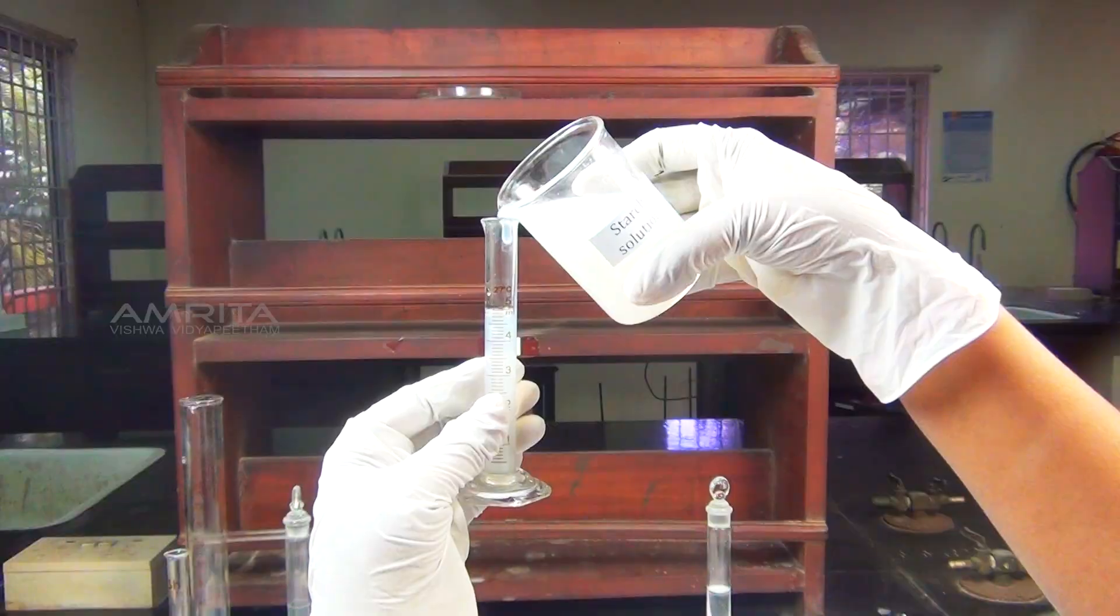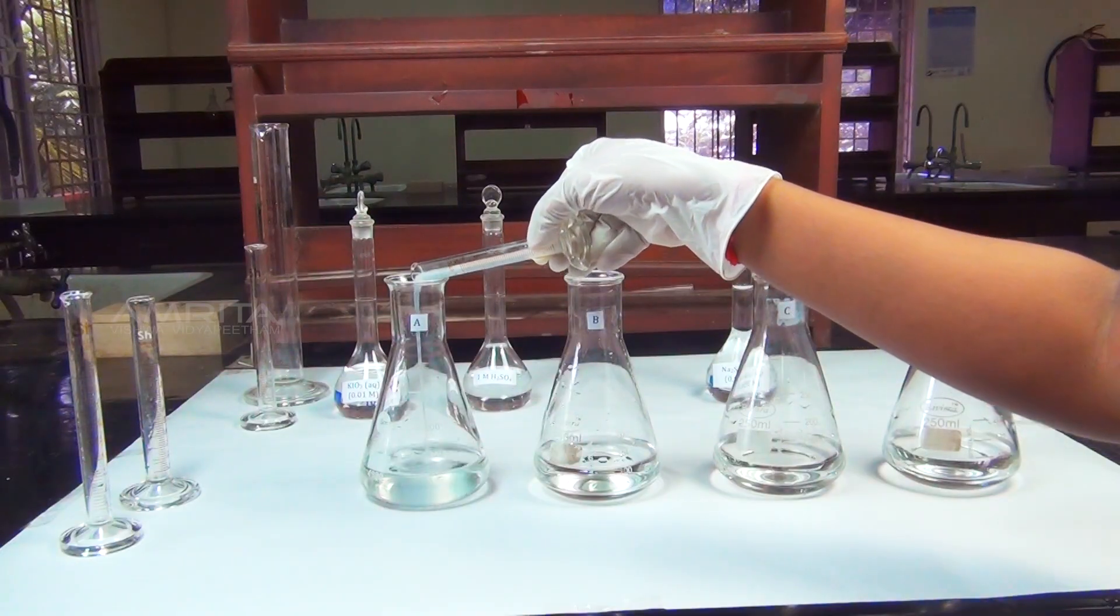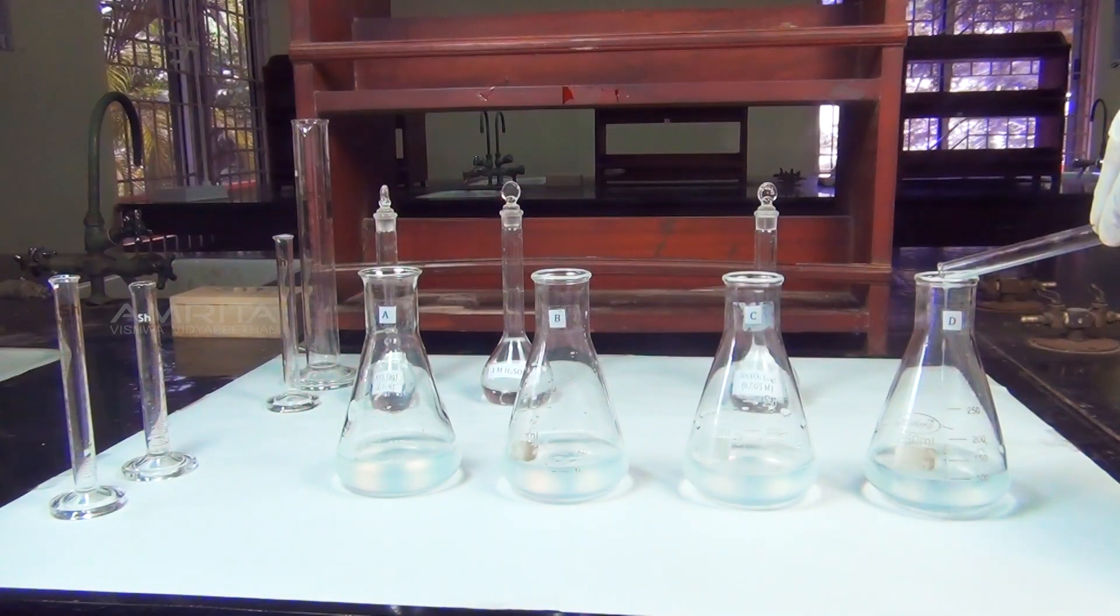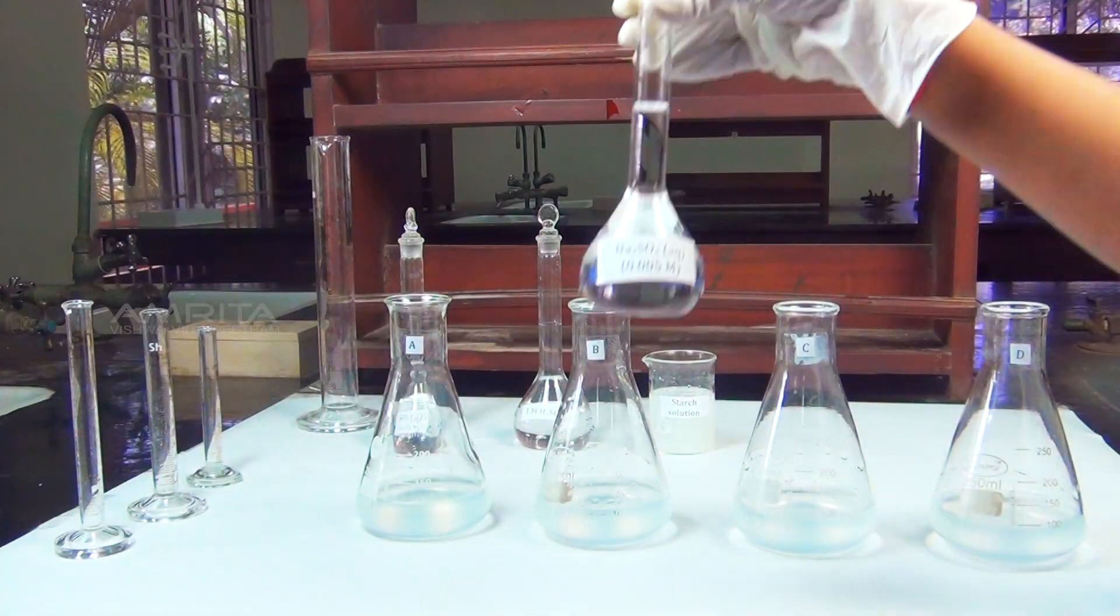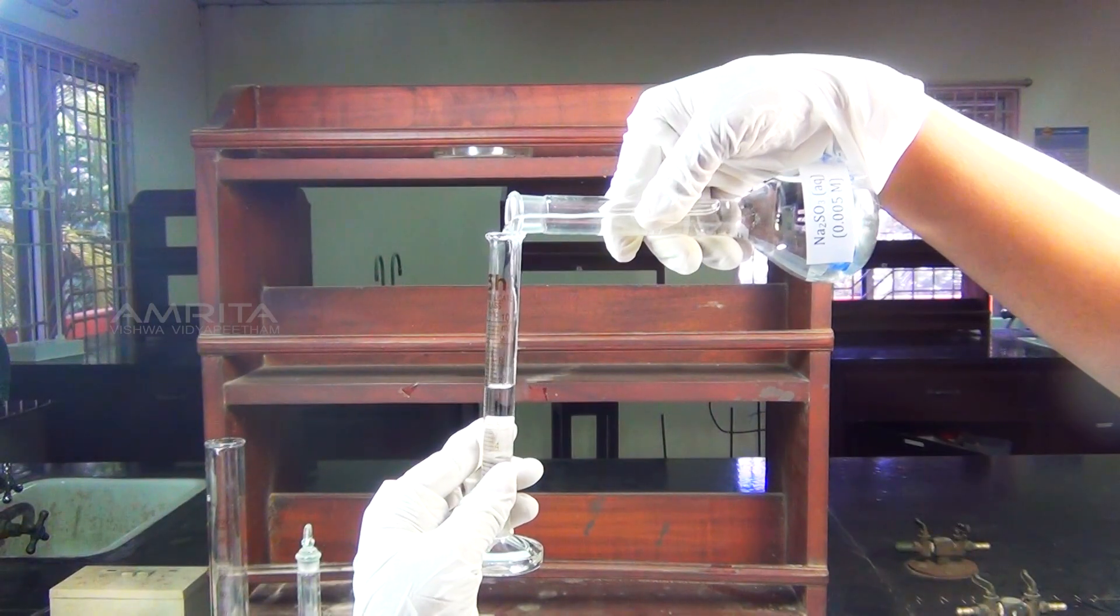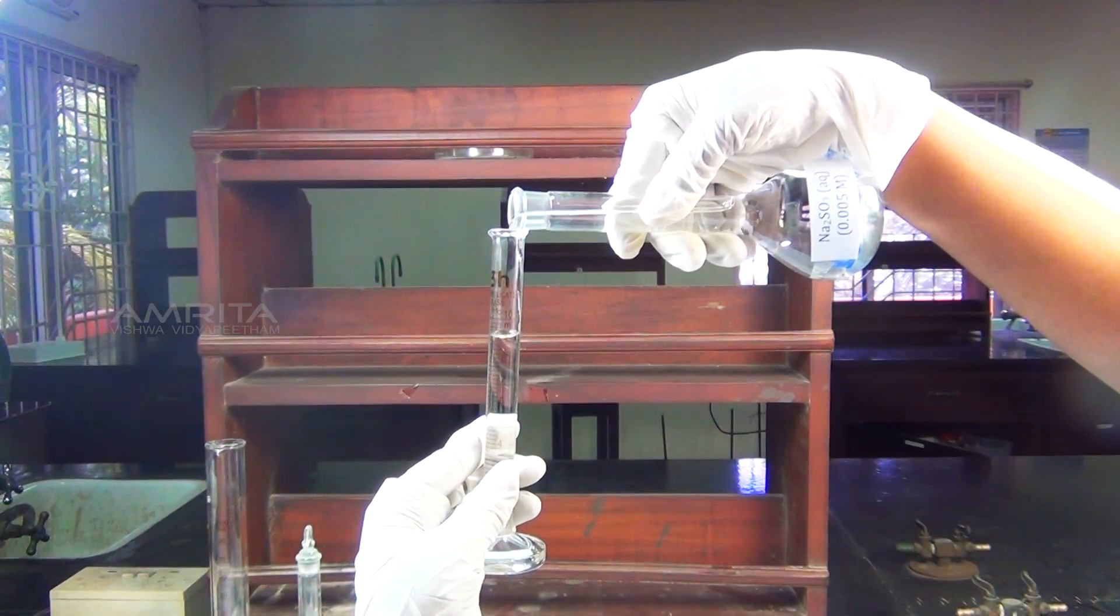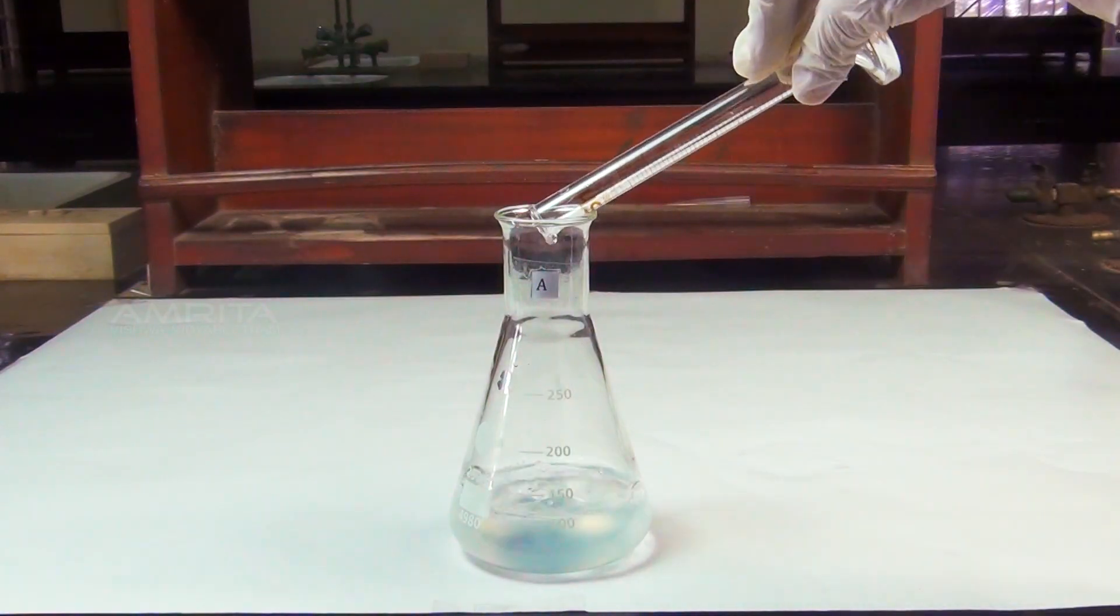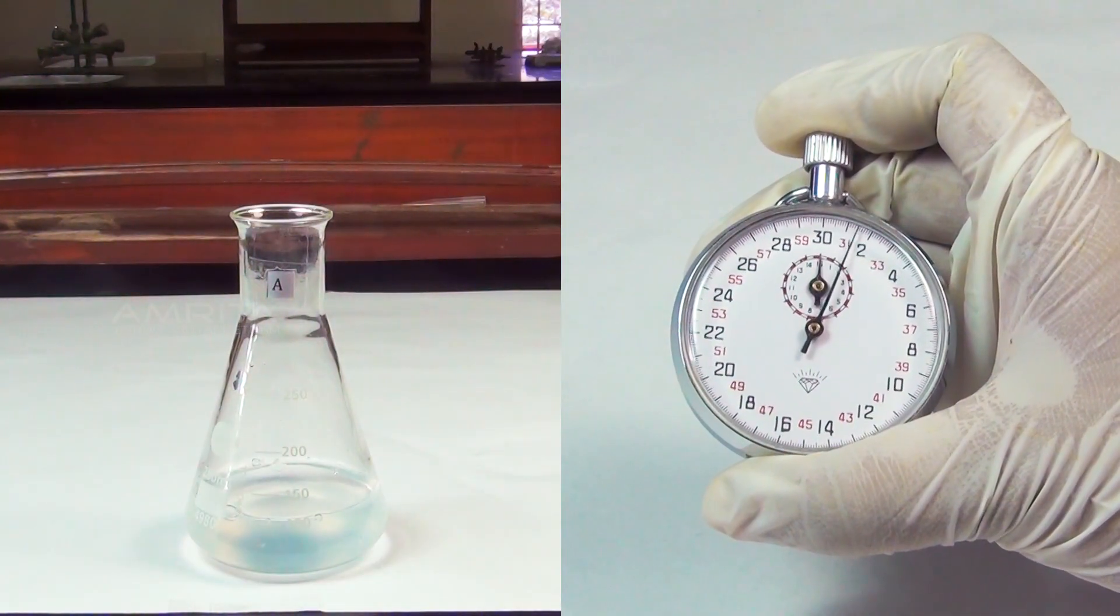Add 5 ml of starch solution to the flasks A, B, C and D using a measuring cylinder. Now, measure 10 ml of 0.005 molar sodium sulphite solution in a measuring cylinder and pour it into flask A and start the stopwatch immediately.